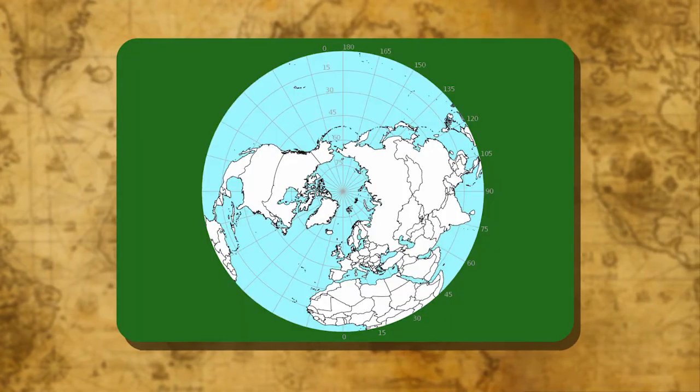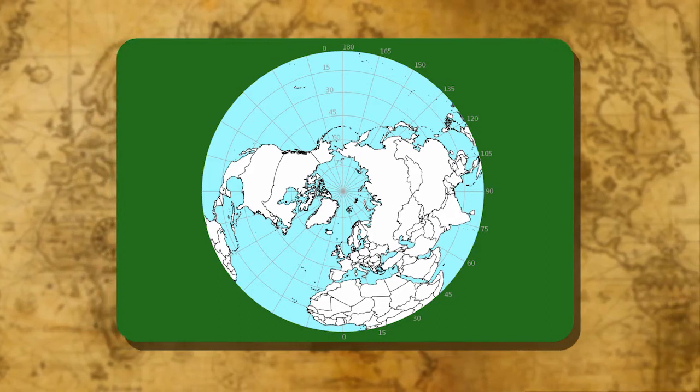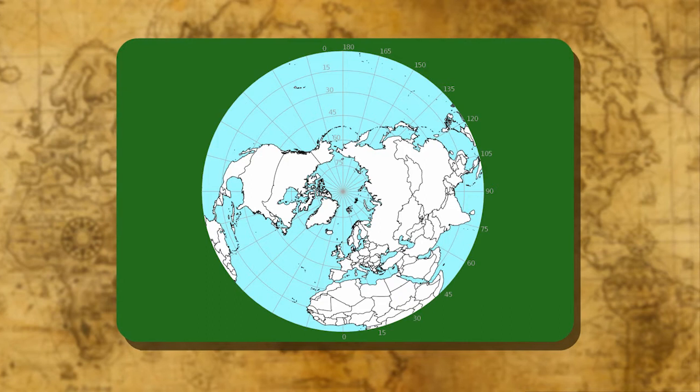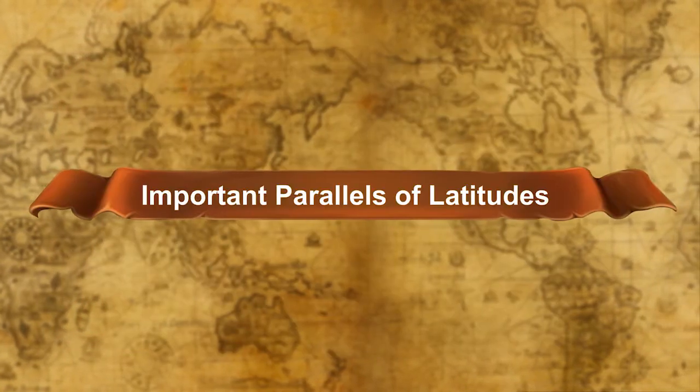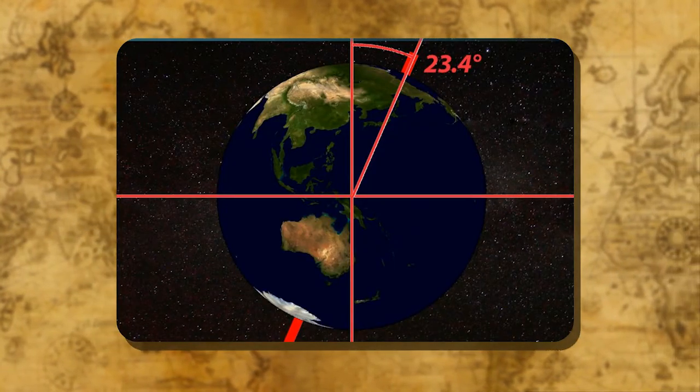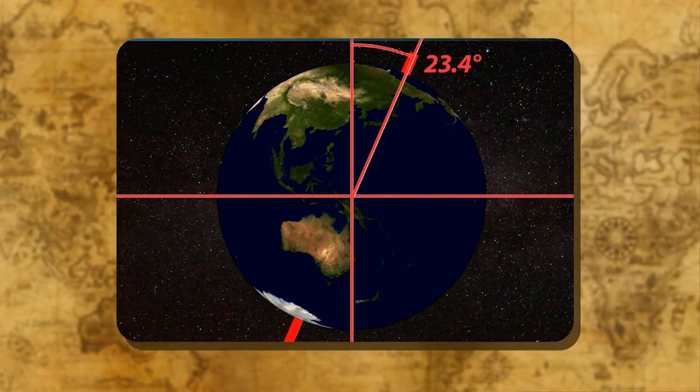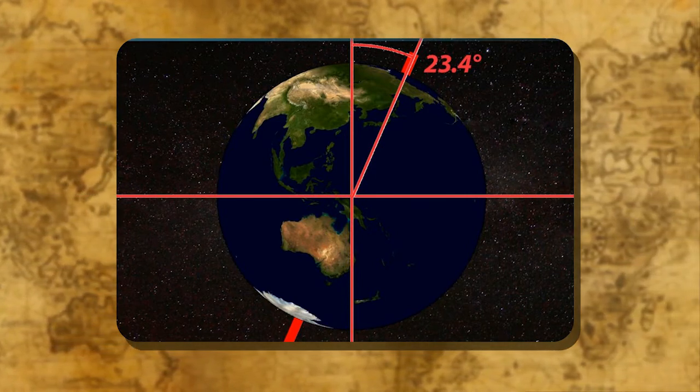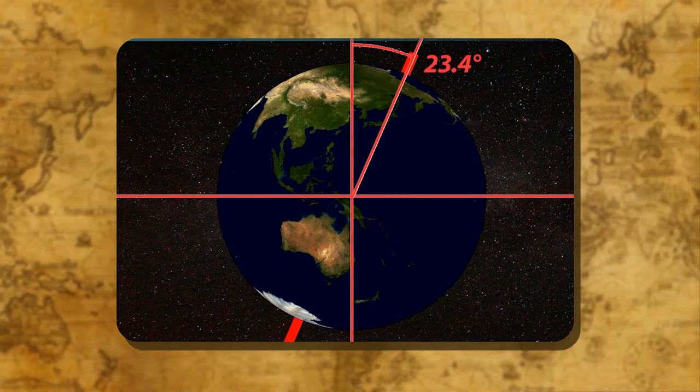The parallels of latitude are represented by degree N (degree north latitude) and degree S (degree south latitude). Important parallels of latitude include the equator. We know that the earth's axis is inclined at an angle of 23 and a half degrees. This inclination gives us four other important parallels of latitude in addition to the equator.